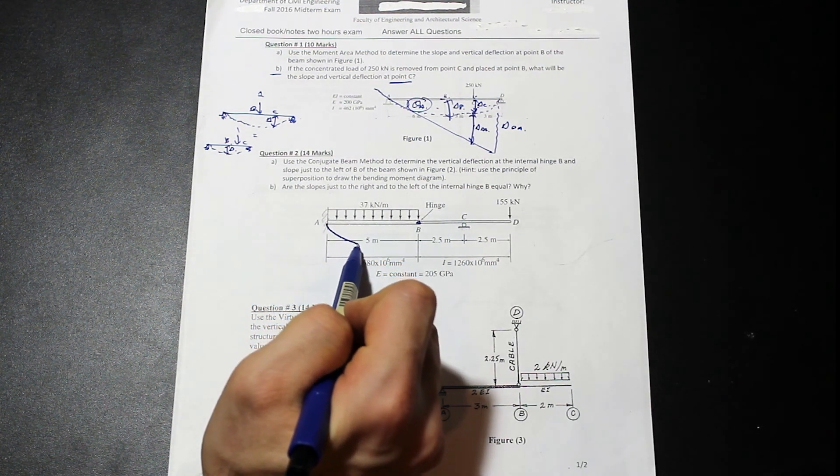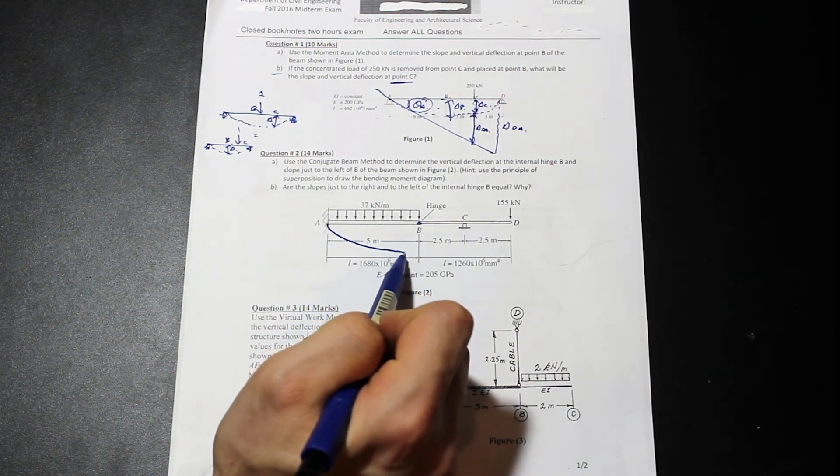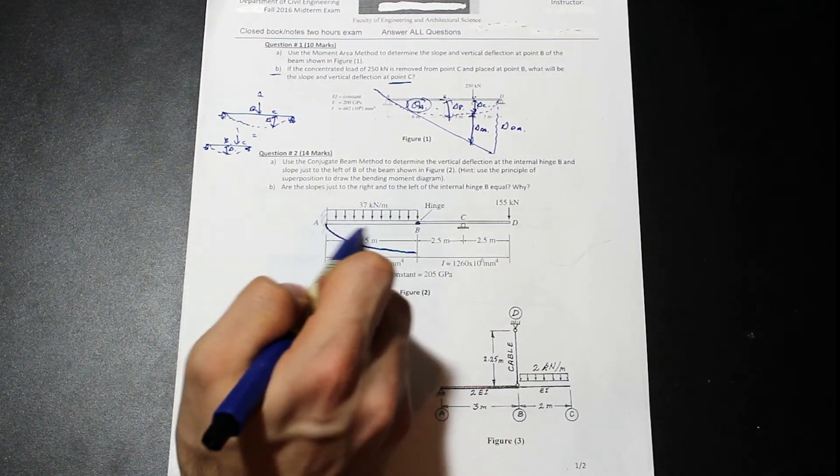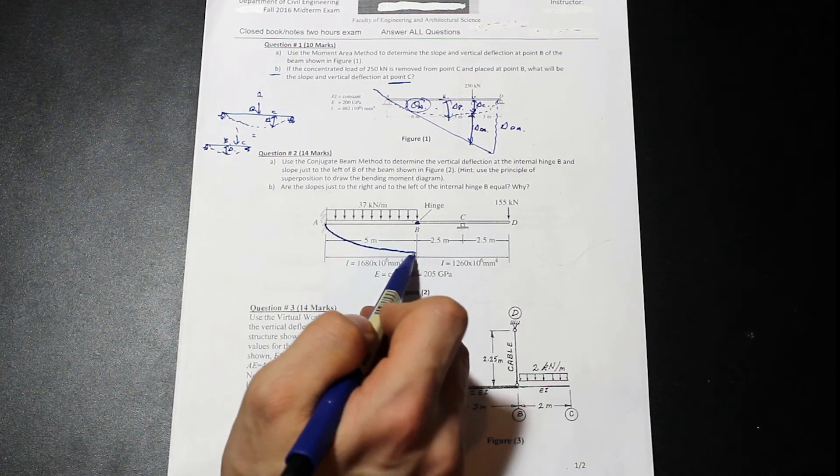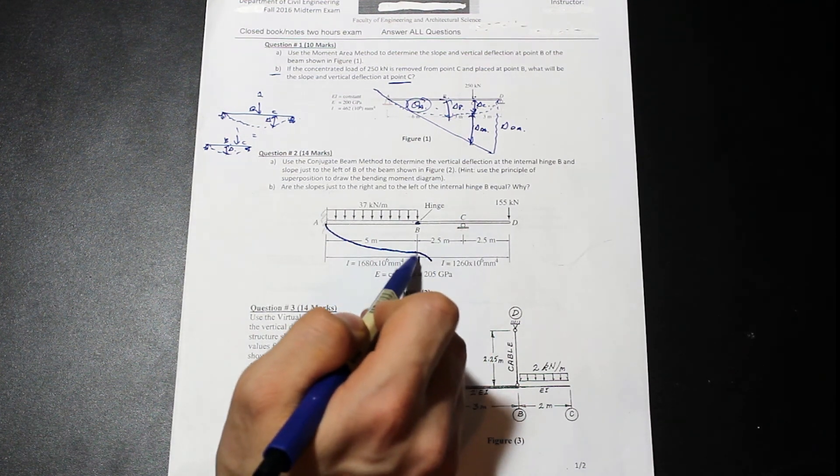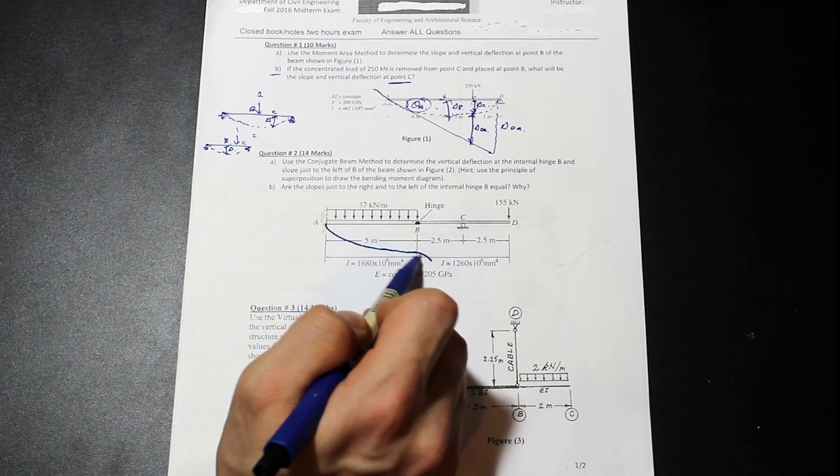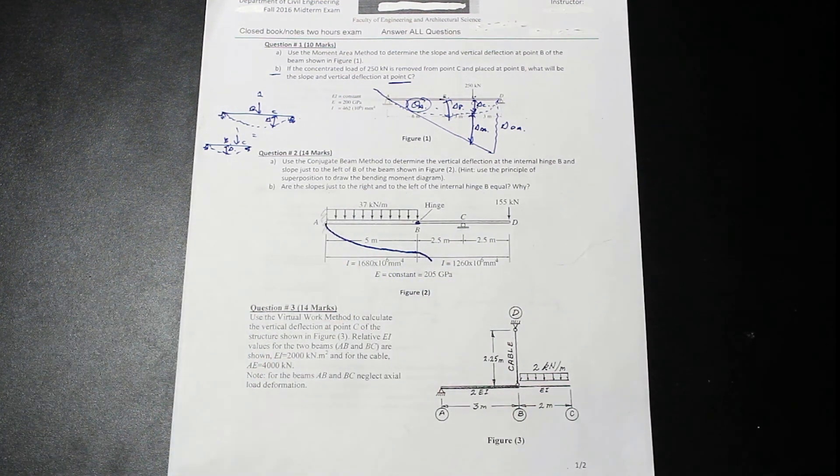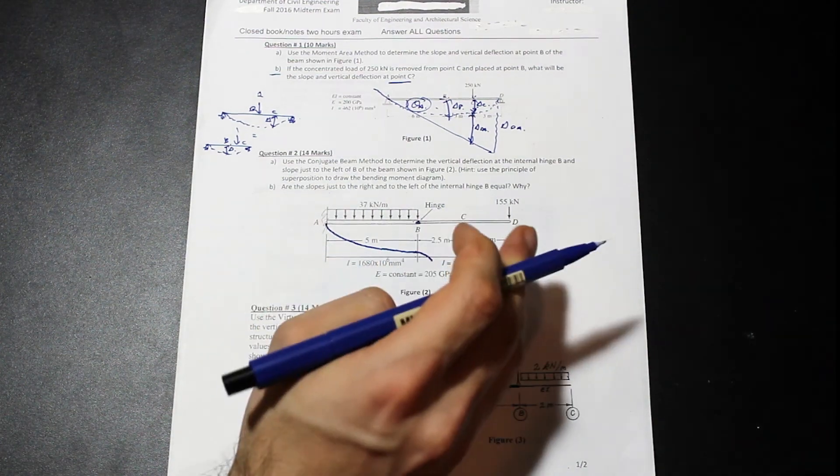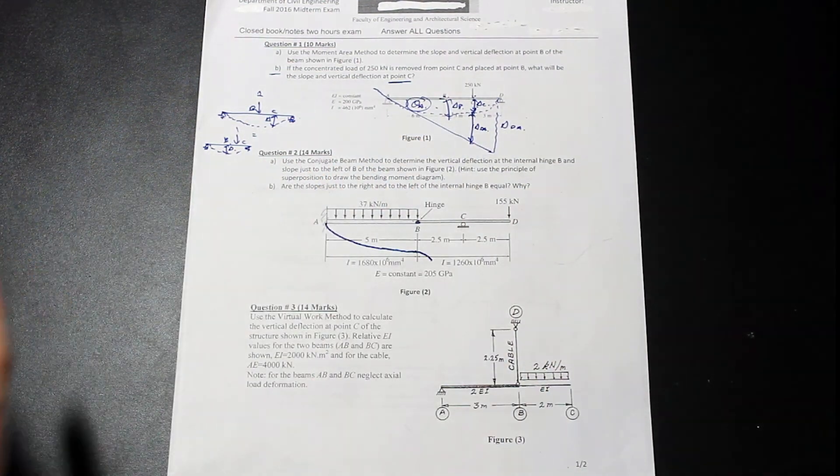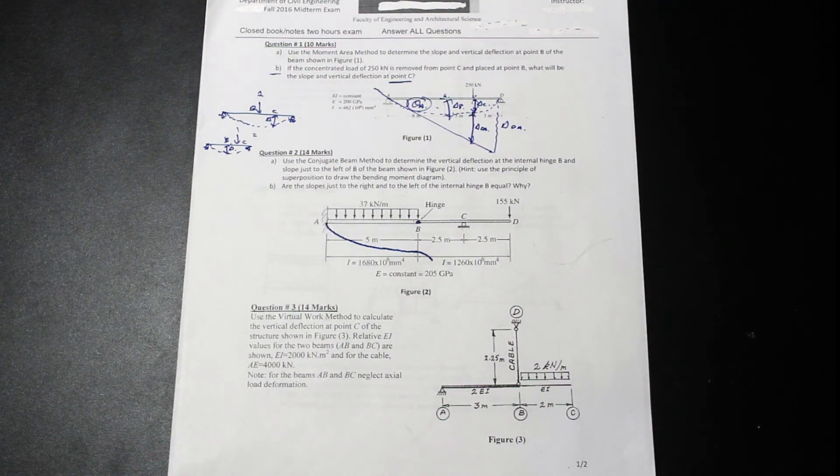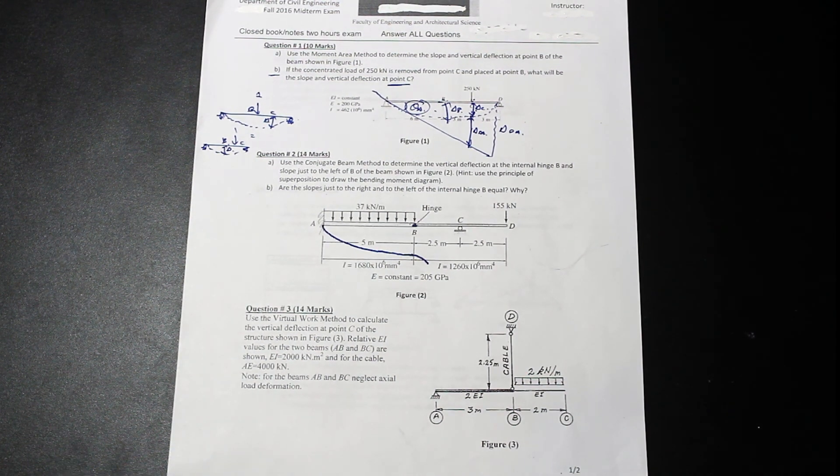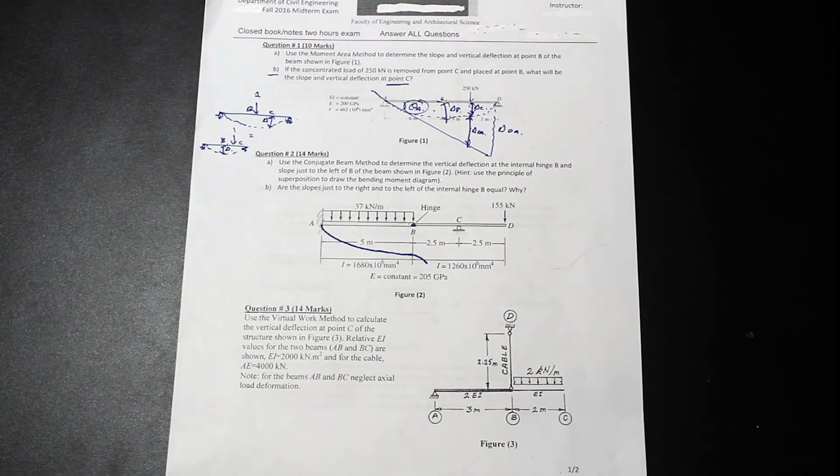But essentially what a hinge does, an internal hinge creates kind of a discontinuity in the elastic curve. So if we have an elastic curve here, so we have our curve and remember that the elastic curve represents the deflection of the beam. So our beam is deflecting, deflecting, deflecting, because we have a load here. And then once we get to the hinge, it actually acts as an inflection point. See? So that's kind of how, so the curvature of the elastic curve is going to reverse. And as a result of that, to the left and the right of the hinge, the slopes are not going to be equal because they're going to be, one's going to be convex and one's going to be concave. I actually talked to a few people after the exam and they got that one wrong. So that's a good point to note.